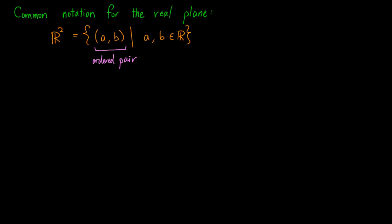These elements are called ordered pairs, which implies that (a,b) is not equal to (b,a) in general.